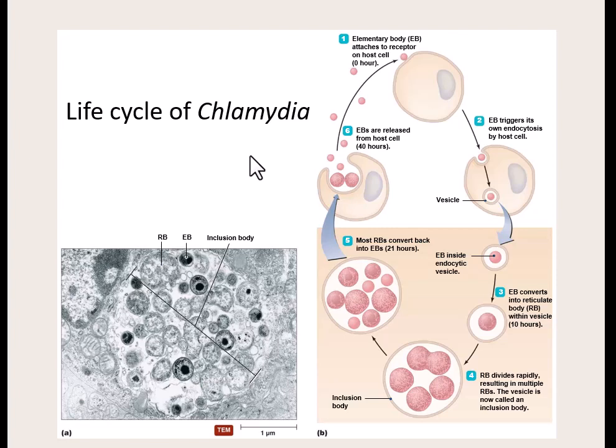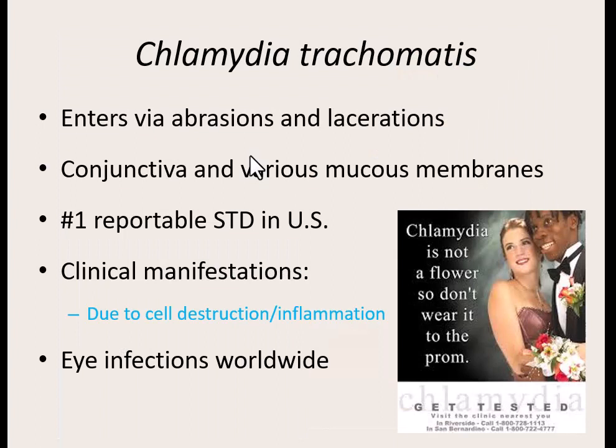There are multiple chlamydias, but we'll focus on the most common one causing disease: Chlamydia trachomatis. Most people just say 'chlamydia' because it's the most common, leaving off the species name. It gets into the body through any type of abrasion past the skin — any cut, scratch, or through the conjunctiva of the eye, or through various mucous membranes including those in the reproductive tract. It is the number one reportable STD in the United States. La Crosse County reports over 500 cases a year of Chlamydia trachomatis, with the majority concentrated around UWL, Western, and Viterbo — the college students.